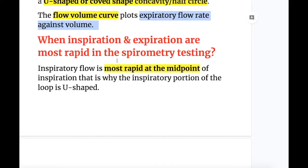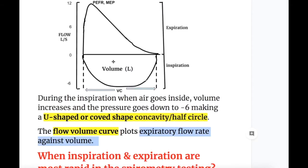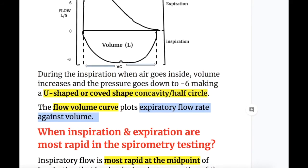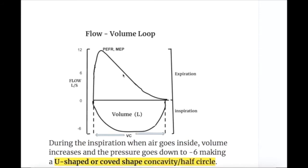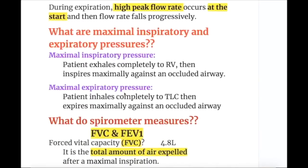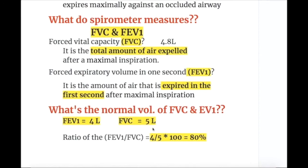When inspiration and expiration are most rapid in spirometry testing, inspiratory flow is most rapid at the midpoint of inspiration, which is why it makes a U-shape in the loop. During the expiratory phase, the peak flow rate occurs at the start of expiration, and then the flow rate falls progressively.